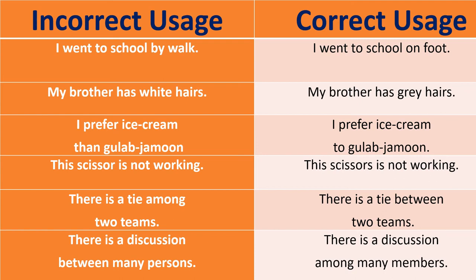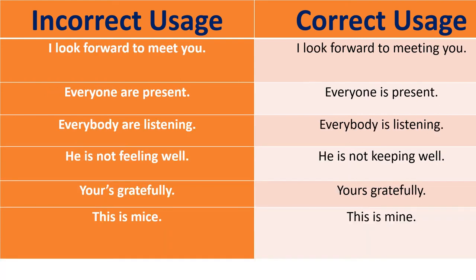'There is a tie among two things' — correct: 'there is a tie between two things.' If it is more than two, we say 'there is a discussion among many persons.' 'I look forward to meet you' — correct: 'I look forward to meeting you.' In written communication, 'forward to' is followed by the -ing form of the verb.